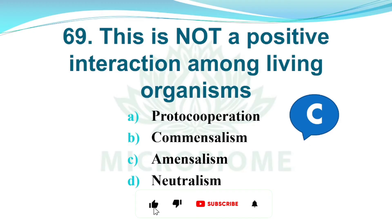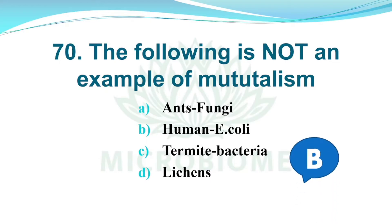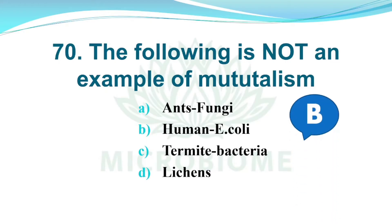And next, the following is not an example of mutualism. Options: A) Ants and Fungi, B) Human Escherichia coli, C) Termite Bacteria, D) Lichens. The right answer is Option B, Human Escherichia coli.